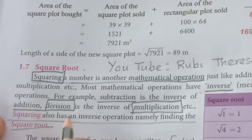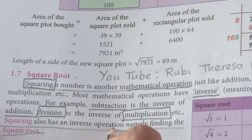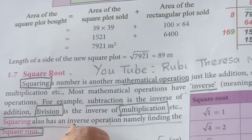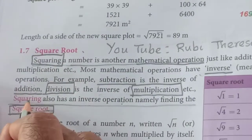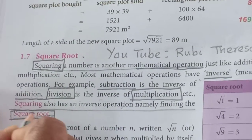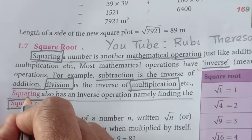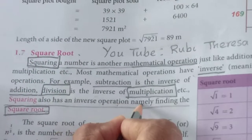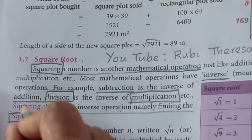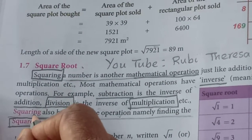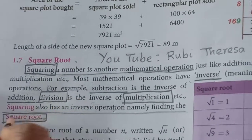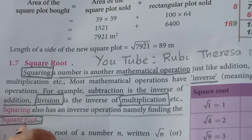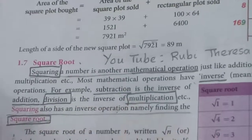Squaring also has an inverse operation. What is that name? Square root. So the inverse operation of squaring is square root. Squaring also has an inverse operation, namely finding the square root. Squaring and square root are inverse operations. What is the inverse operation of square root? Squaring.